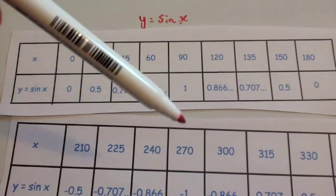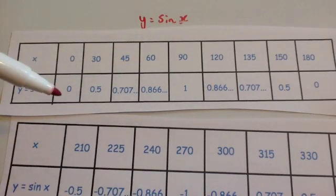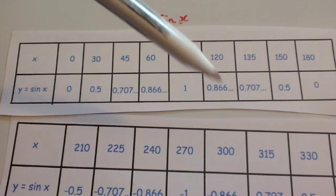So whenever you've, there'd be a line of symmetry I suppose in this graph. Well, in this section of the graph between 0 and 180, and the line of symmetry would be at when it reaches 90 degrees. So this is a bit of a curve, it sort of goes up from 0, up to 1, and back down again.